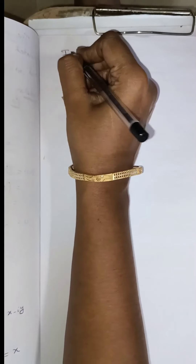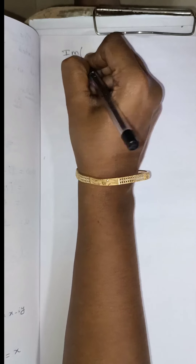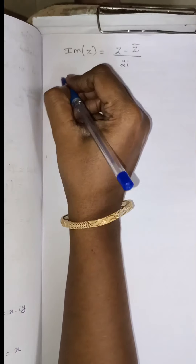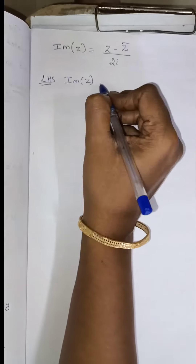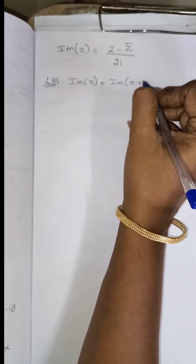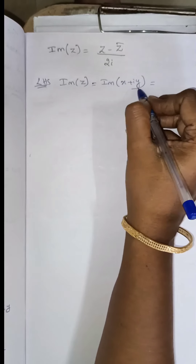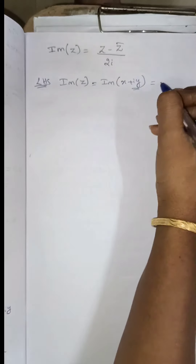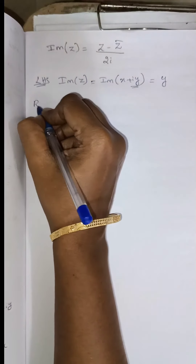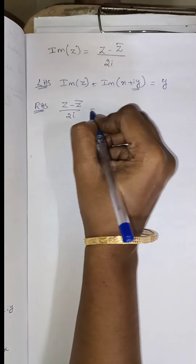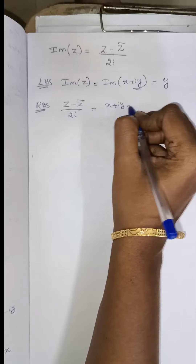In the same way for the imaginary part: the imaginary part of Z equals Z minus Z bar divided by 2i. The LHS is the imaginary part of Z, which is X plus iY, so the imaginary part is Y. For the RHS, Z minus Z bar divided by 2i: Z value is X plus iY, minus Z bar which is X minus iY, divided by 2i.